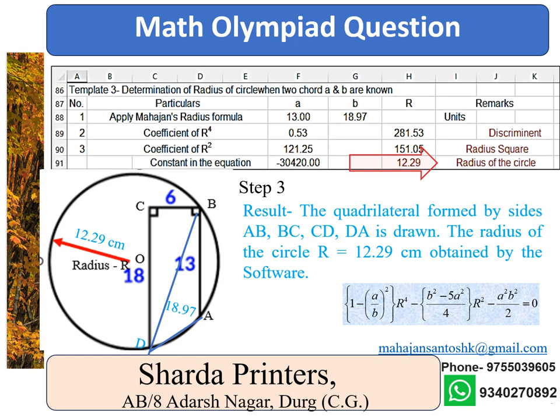The construction is explained. Draw a circle of radius 12.29 cm, then draw the chords AB equal to 13 cm and BD equal to 18.97 cm. Complete the figure.